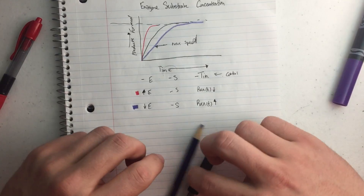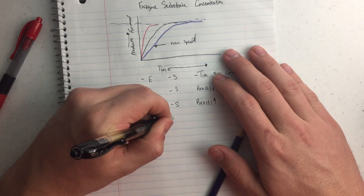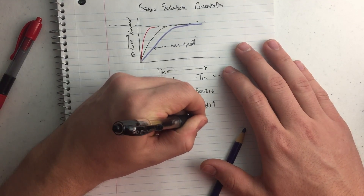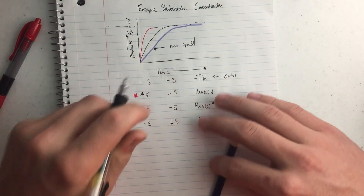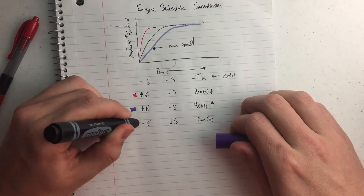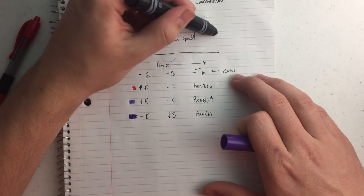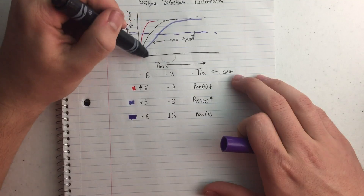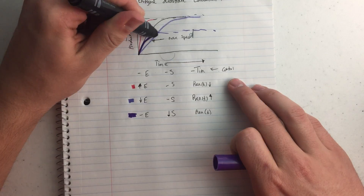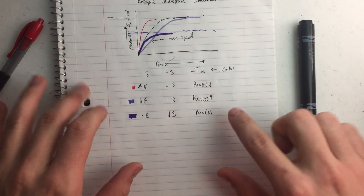But what if we decrease the amount of substrate? So if the enzyme stays the same and the substrate goes down, then the reaction time is going to go down. If I draw this with the purple marker — if I'm only going to this height and I have a normal amount of enzyme, then it's going to rise and then taper off. It's going to be faster, because I have less substrate to react with.